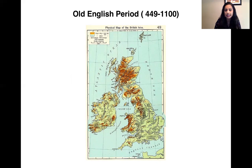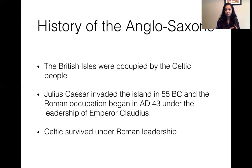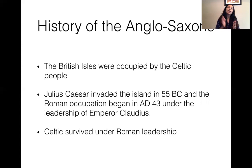Here is a map of the British Isles from around AD 400. To give you a history of where England was at AD 400 — the Celtic people occupied the British Isles as the indigenous people of England. They existed before the colonization or the invasion of Rome. The Roman occupation began in AD 43 under the leadership of Emperor Claudius.